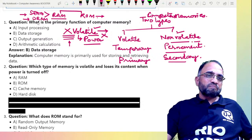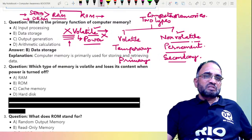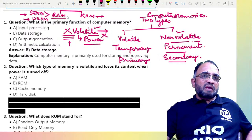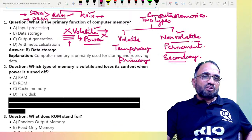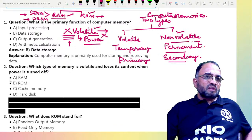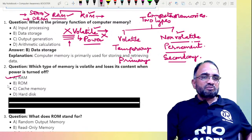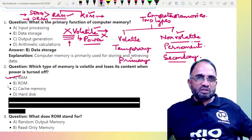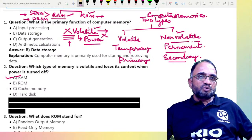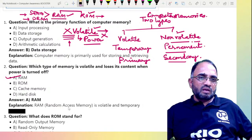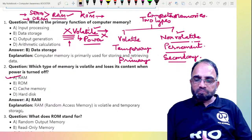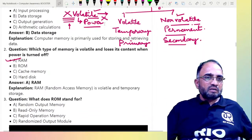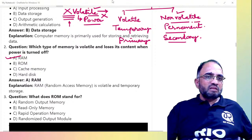DRAM consumes more power and SRAM consumes less. RAM is a volatile memory and ROM is a non-volatile memory. So RAM is the right answer for question number two — it was asked during previous exams. RAM is volatile memory.